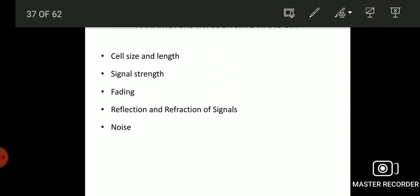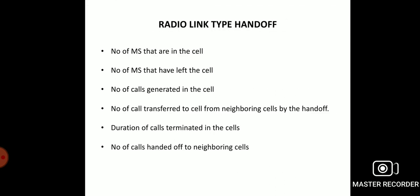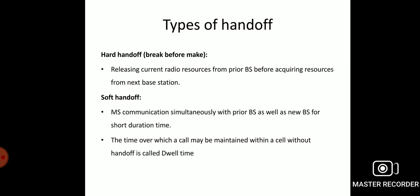Now we can move to the radio link type handoff. The radio link type handoff, there are some techniques that are followed: number one, number of mobile stations that are in the cell; number two, number of mobile stations that have left the cell; number three, number of calls generated in the cell; fourth one is number of calls transferred to cell from neighboring cells by handoff; number five, duration of calls terminated in the cell; number six, number of calls handed off to neighboring cells. These are the parameters under the radio link type handoff techniques.